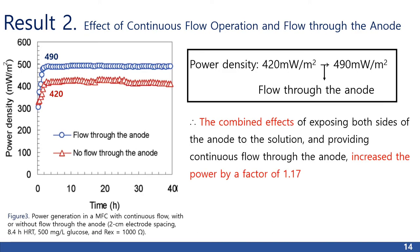Result 2 — Effect of continuous flow operation and flow through the anode: when the reactor was operated in continuous flow mode with the anode placed against the wall and set 2 cm from the cathode with no flow through the anode, the power was 420 mW per meter square. When the anode was placed so that fluid flow was directed through it under continuous flow conditions 2 cm from the cathode, power output was increased to 490 mW per meter square. Thus, the combined effects of exposing both sides of the anode to the solution and providing continuous flow through the anode increased the power by a factor of 1.17.